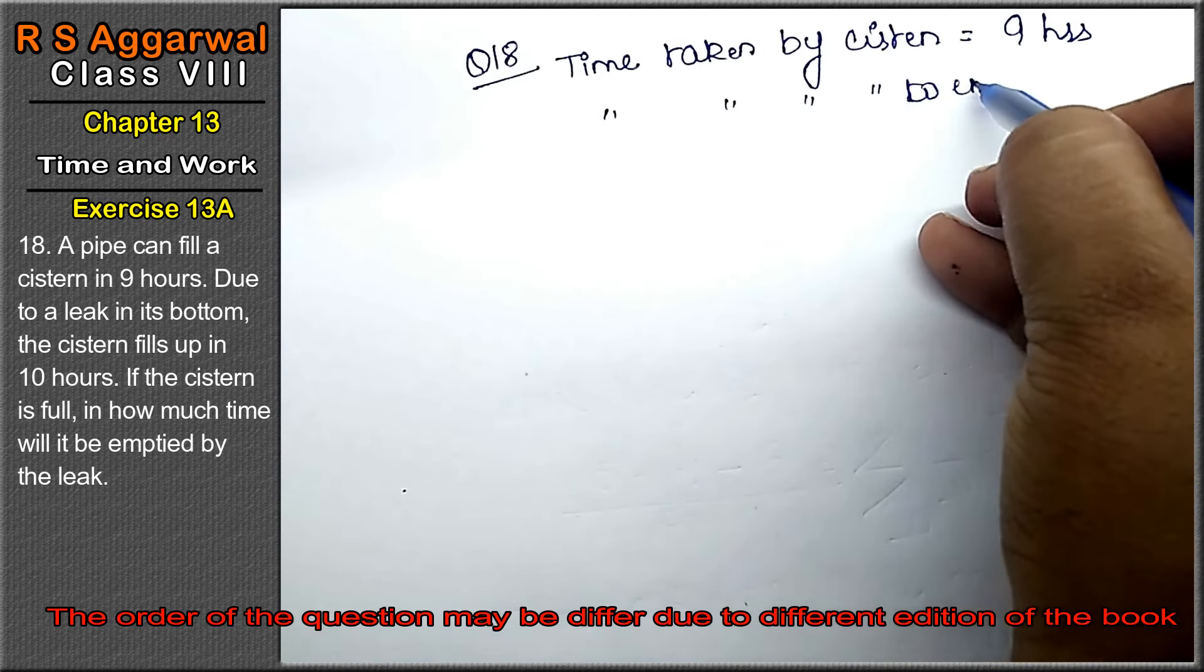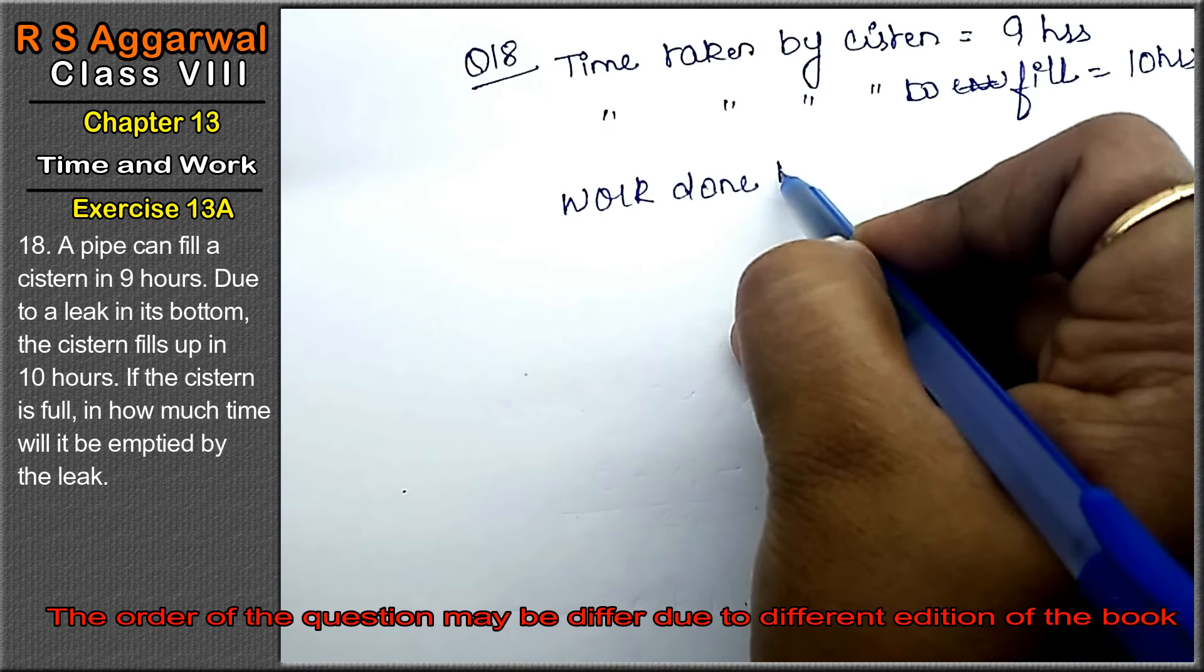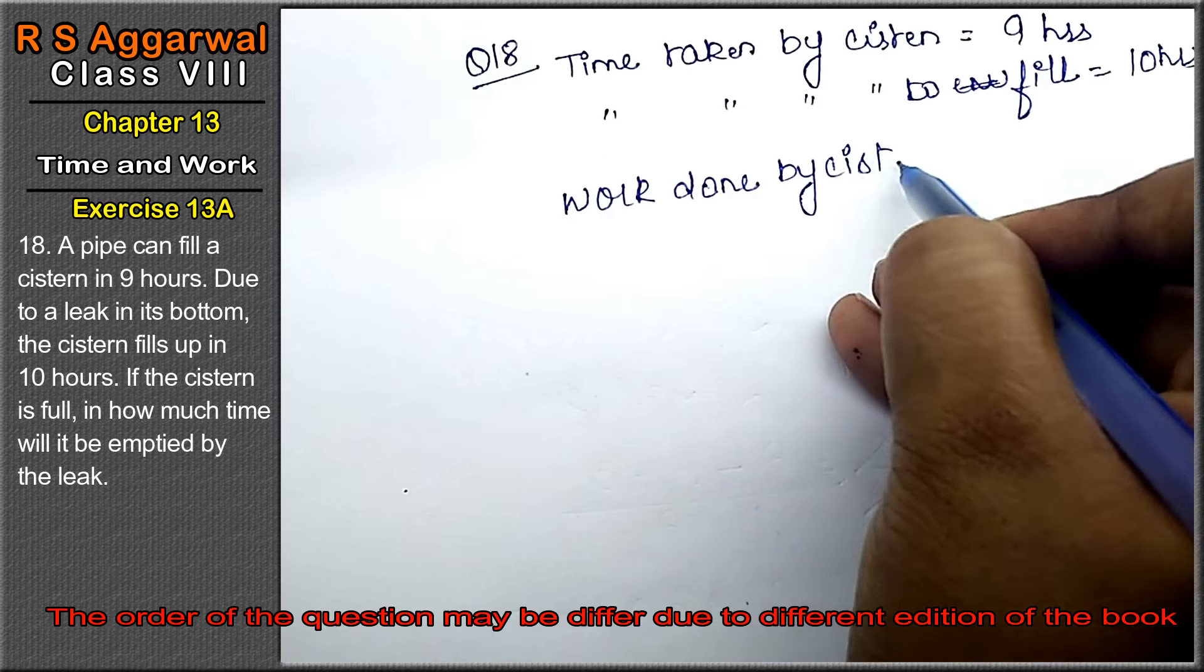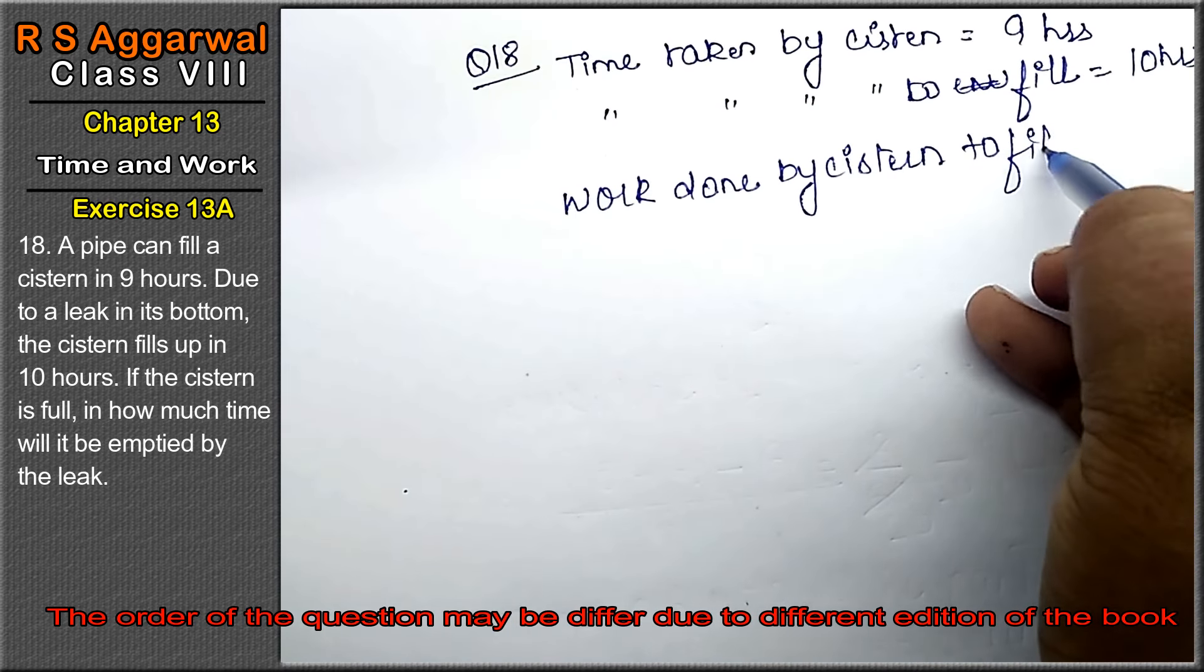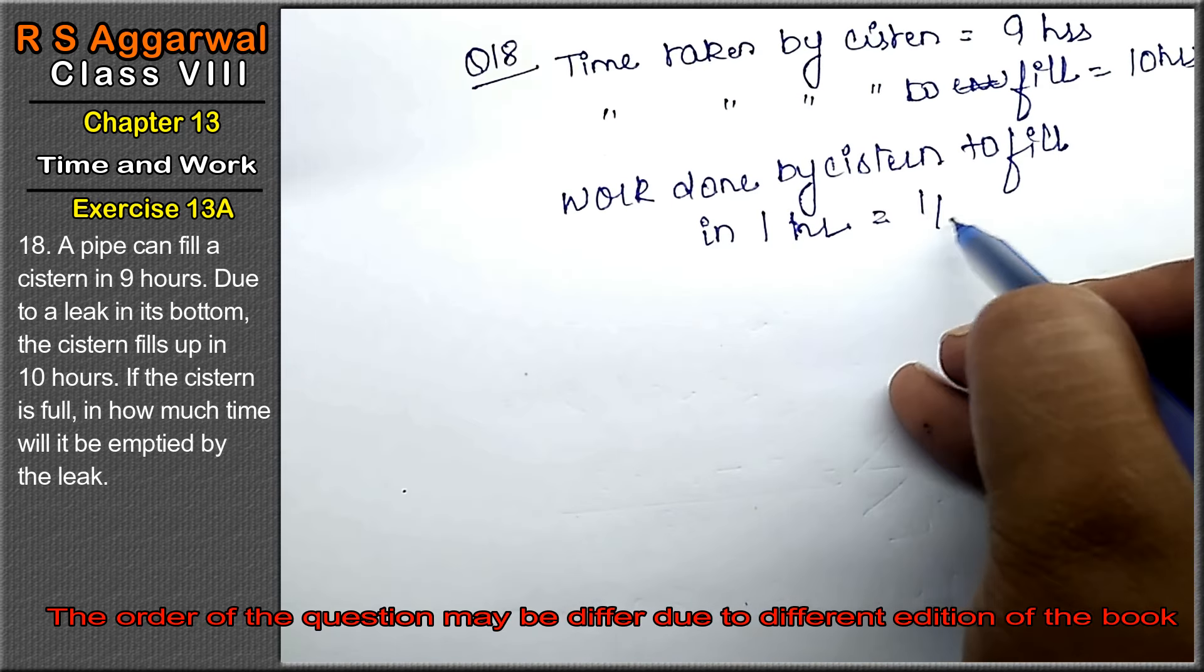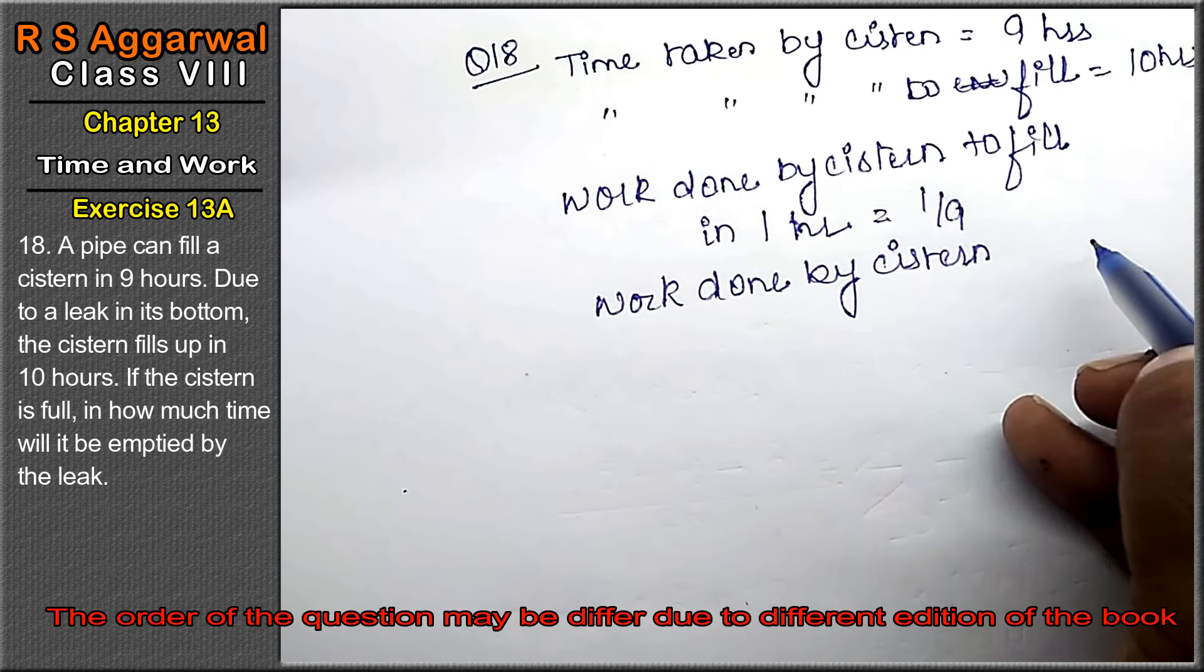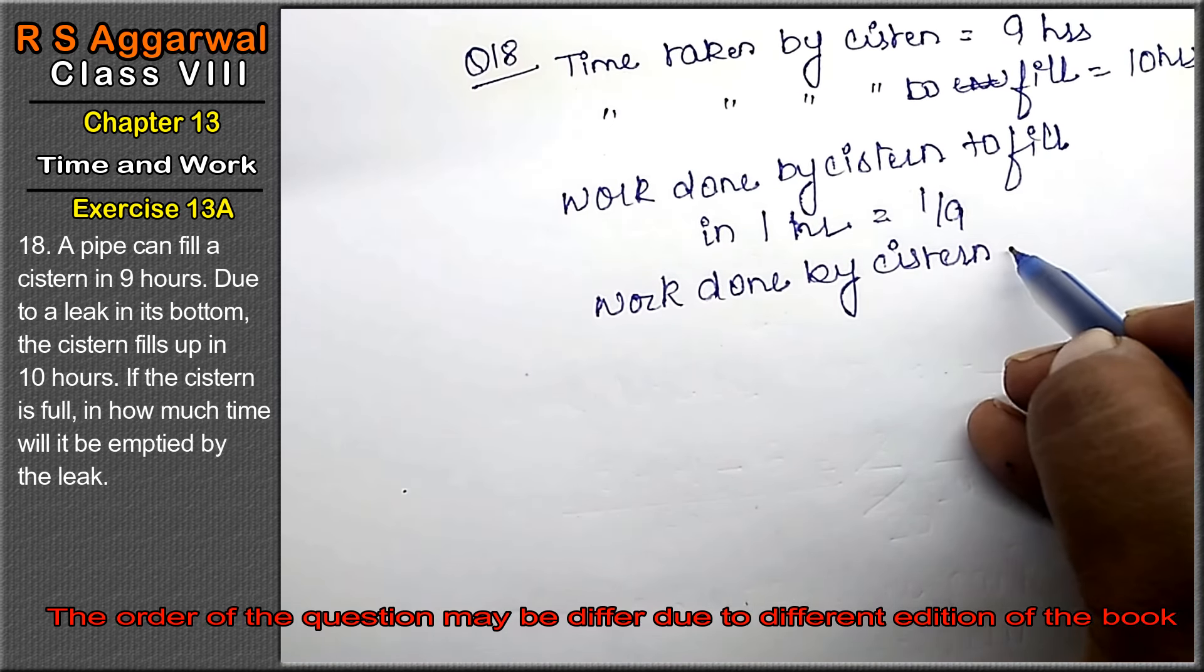So work done by cistern to fill in one hour equals 1 upon 9. And work done by cistern in one hour equals 1 upon 10.